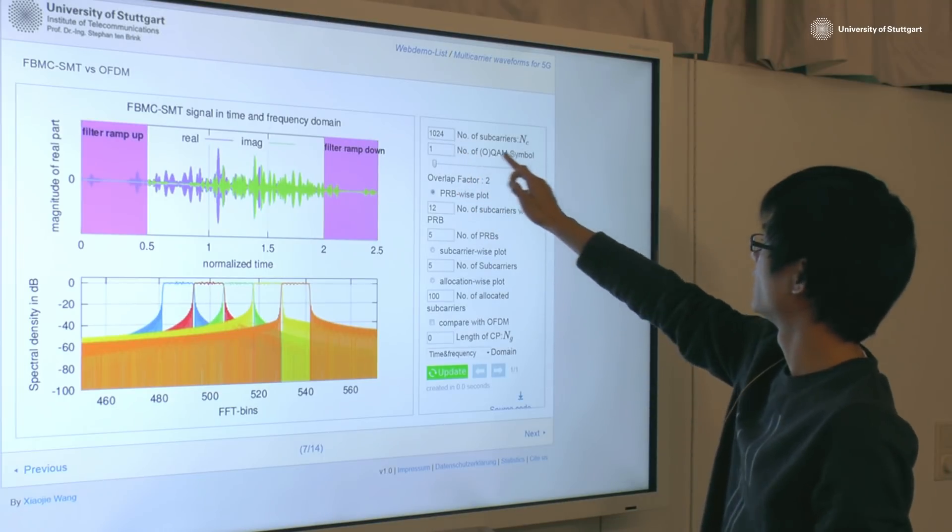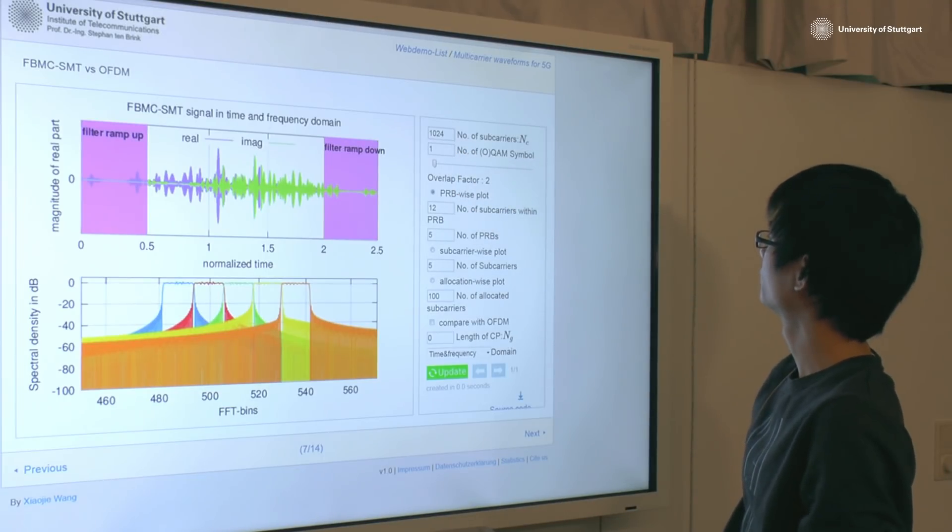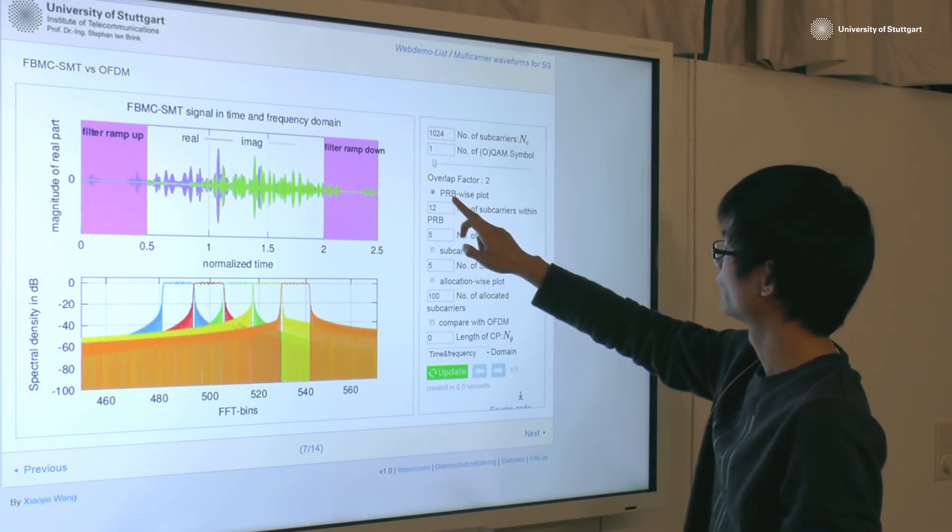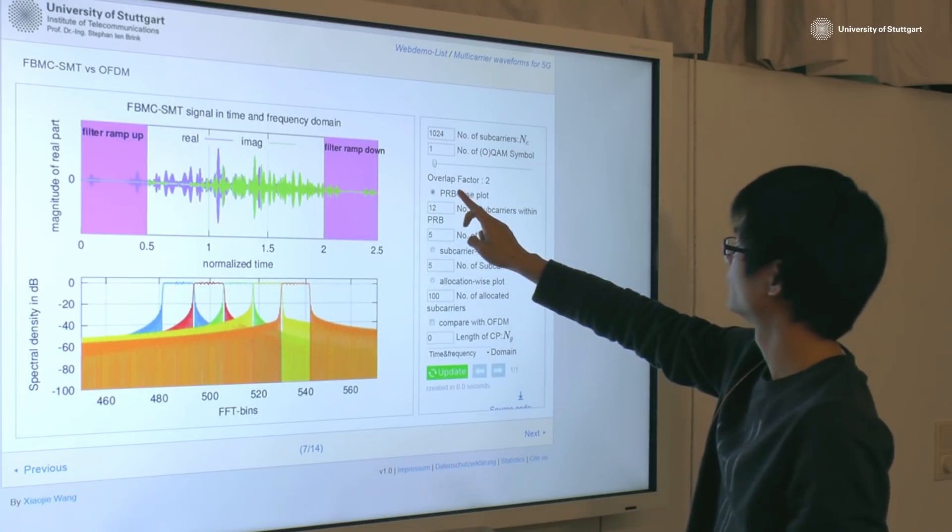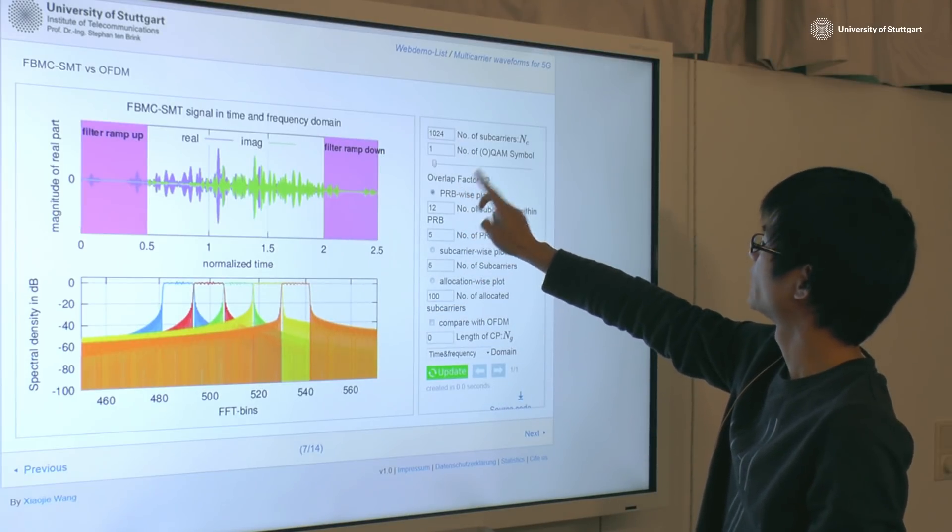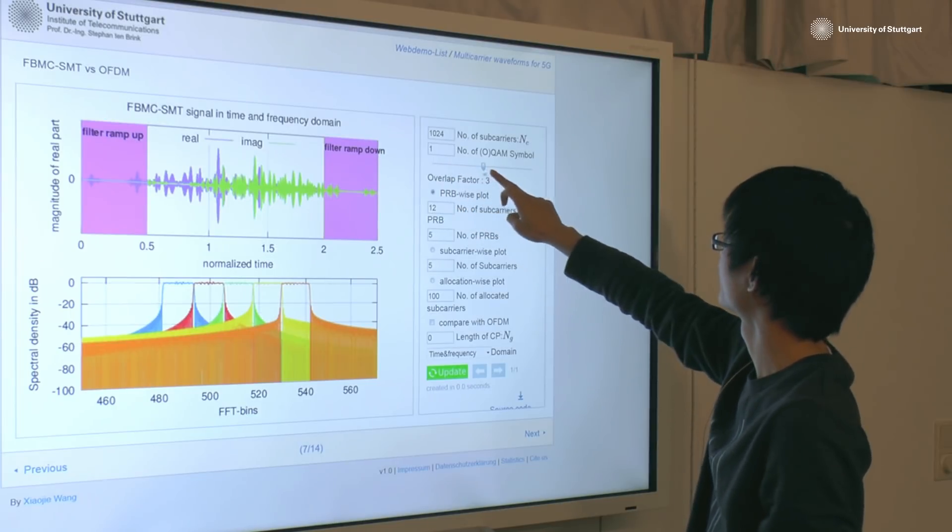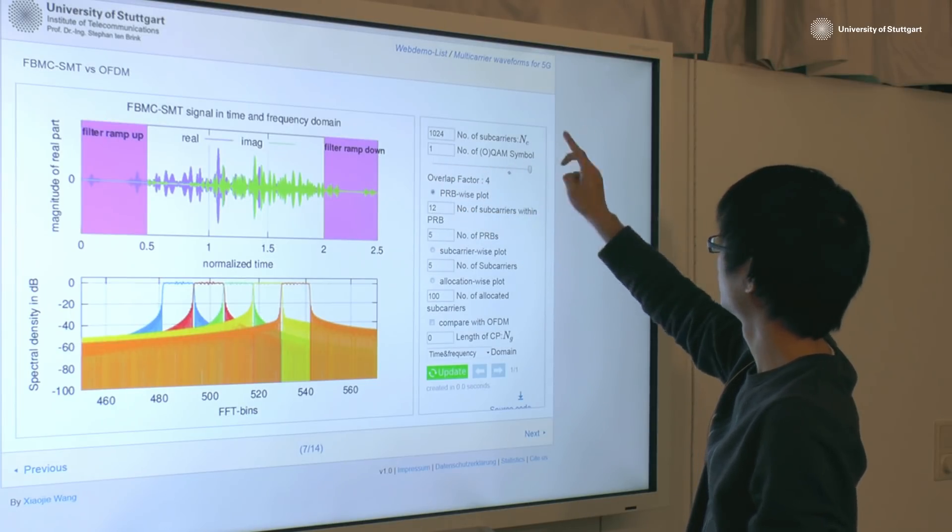Here, you can change the number of transmitted offset QAM symbols or QAM symbols. You can view the spectrum in frequency domain, PRB-wise, subcarrier-wise and allocation-wise.